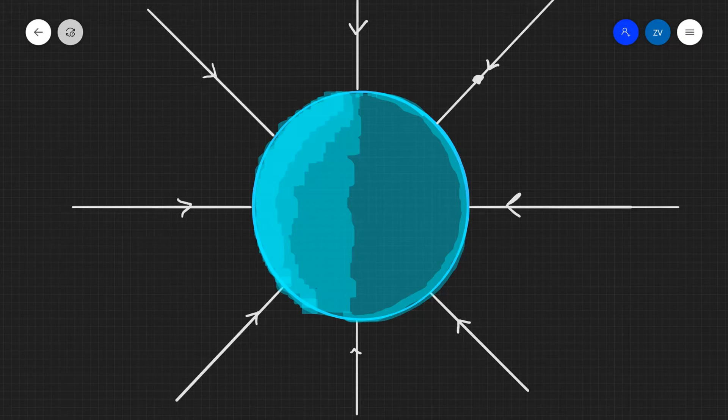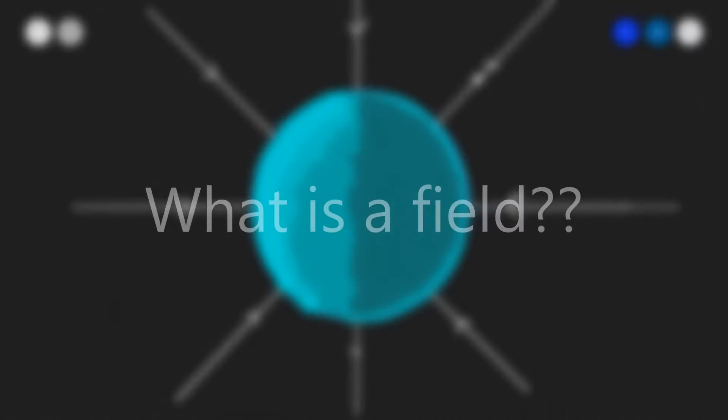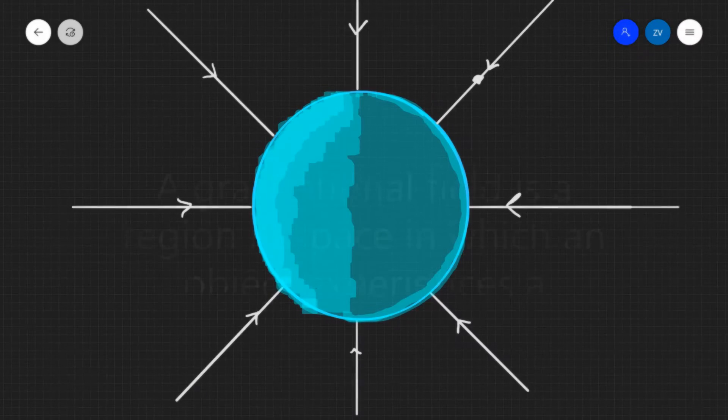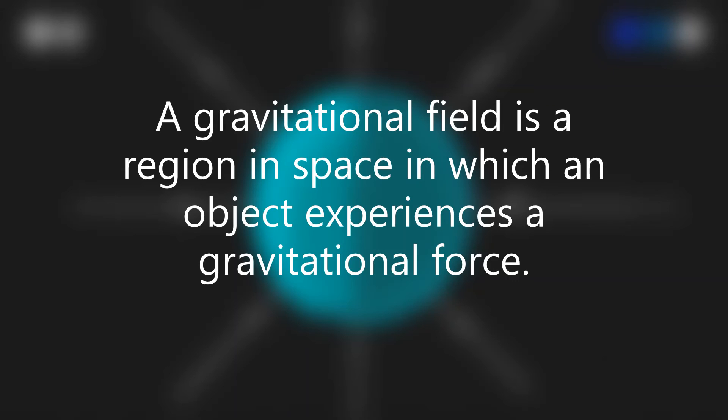Today we're going to be talking about gravitational fields. The first question we need to answer is: what is a field? A field is simply a region in space in which an object experiences a force, and a gravitational field is a region in space in which an object experiences a gravitational force.